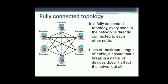Next is fully connected topology. In fully connected topology, each and every computer is connected to every other computer. Every node in the network is directly connected to each other — that is why it is called fully connected. It uses the maximum length of cable. It ensures that a break in a cable or device does not affect the network at all — any one cable breaks and the remaining computers go on very smoothly.